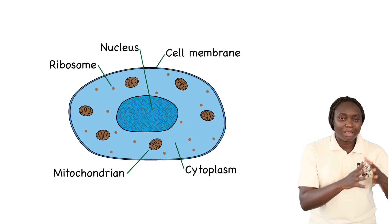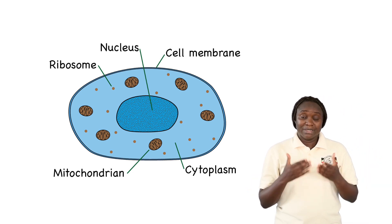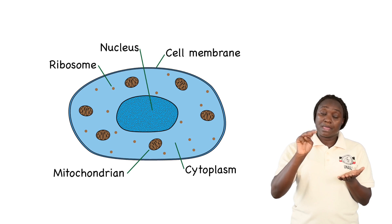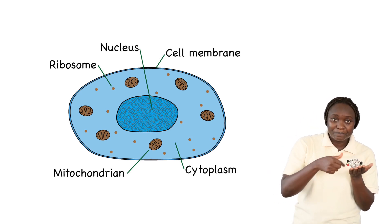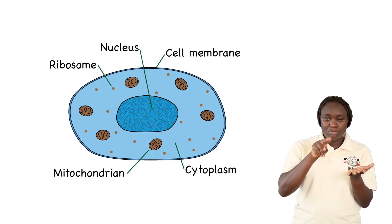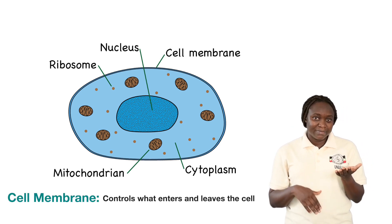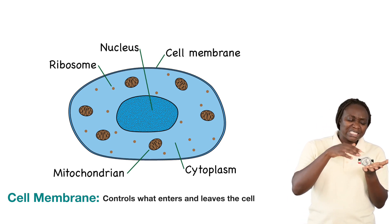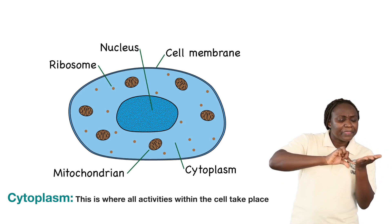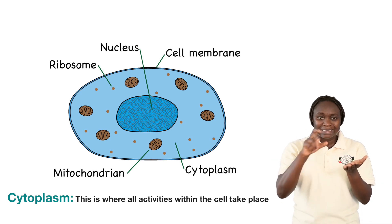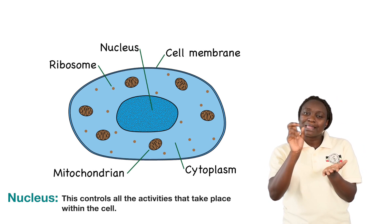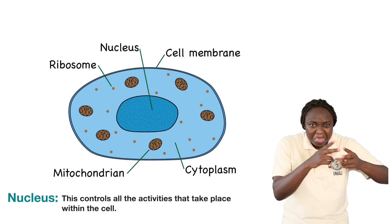Let's go through this together. We have three main parts: the cell membrane, the cytoplasm, and the nucleus. The cell membrane controls what enters and leaves the cell. The cytoplasm is where all activities within the cell take place. And the nucleus controls the activities that take place within the cell.